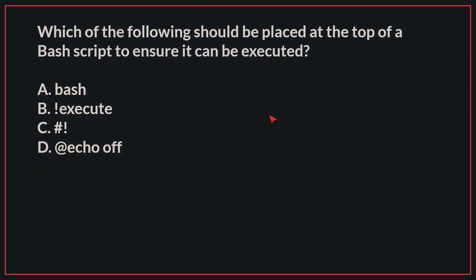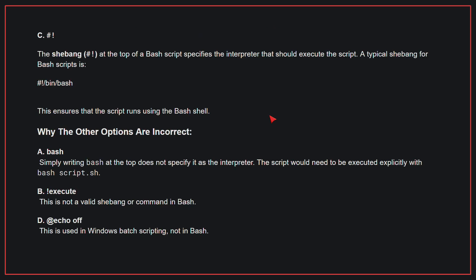Which of the following should be placed at the top of a bash script to ensure it can be executed? The correct answer is C, the shebang. The shebang at the top of a bash script specifies the interpreter that should execute the script. A typical shebang for bash scripts ensures the script runs using the bash shell. A, bash: simply writing bash at the top does not specify it as the interpreter. The script would need to be executed explicitly with bash script.sh.